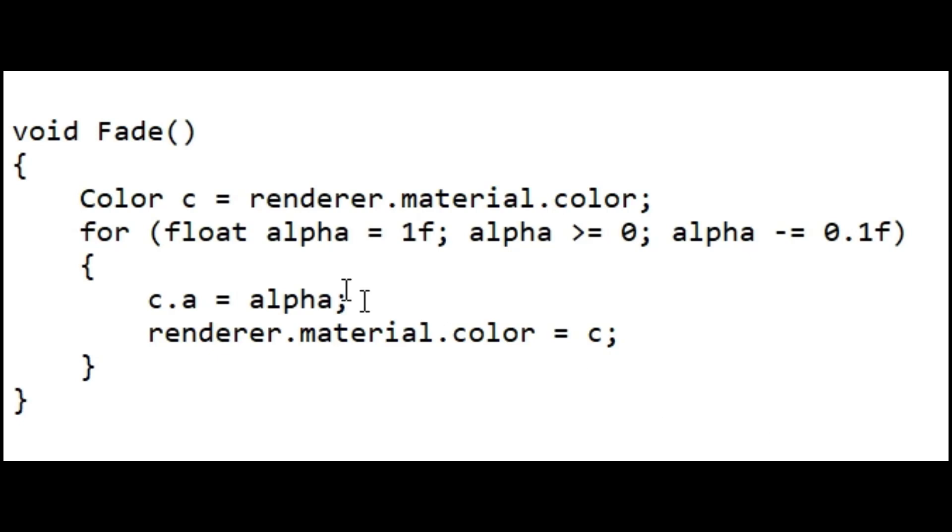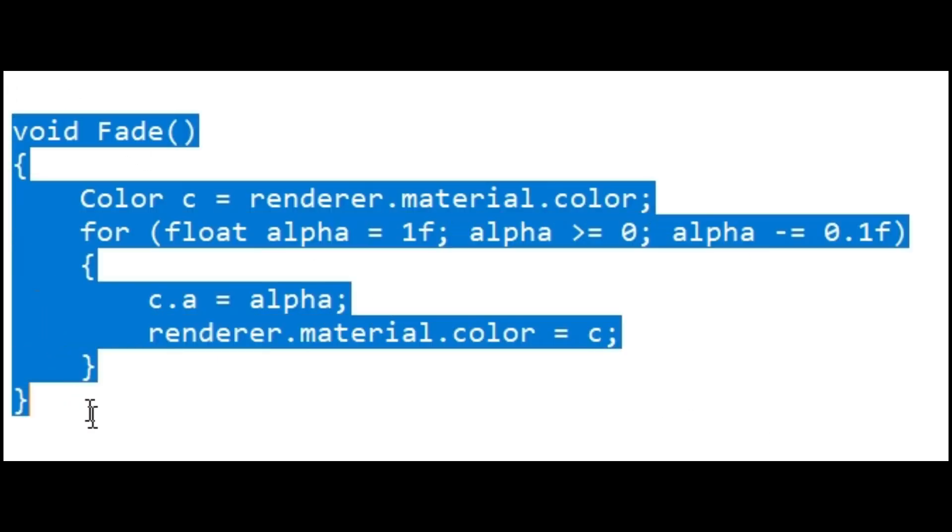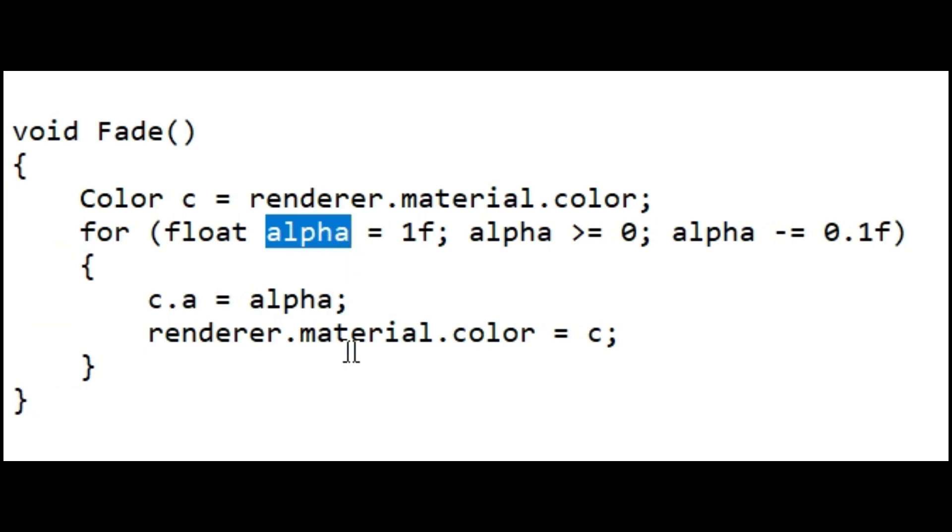As an example, consider the task of gradually reducing an object's alpha value until it becomes invisible. In this example, the fade method doesn't have the effect you might expect. To make the fading visible, you must reduce the alpha of the fade over a sequence of frames to display the intermediate values that Unity renders.